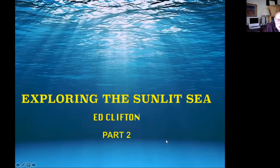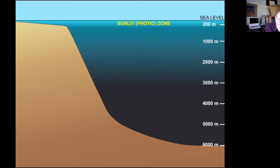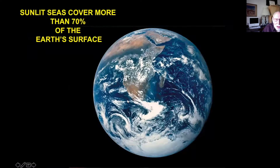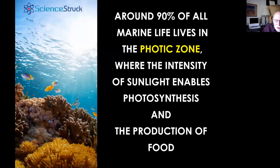This is part two of the series on exploring the sunlit sea. As I said last week, the sunlit sea is a very small part of the volume of the ocean, just a veneer at the surface, yet covers more than two-thirds of the surface of the earth. And it is where most of the marine life lives in this photic zone where there's enough light to enable photosynthesis and production of food.